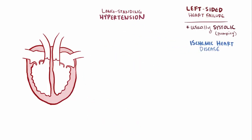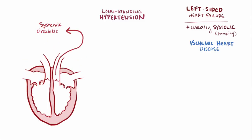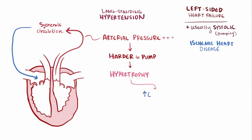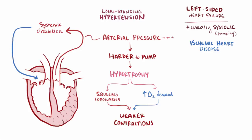Long-standing hypertension is another common cause of heart failure. As arterial pressure increases in the systemic circulation, it gets harder for the left ventricle to pump blood out. To compensate, the left ventricle actually bulks up and its muscles hypertrophy, or grow, so that the ventricle can contract with more force. The increase in muscle mass also means there's a greater demand for oxygen, and the coronaries get squeezed down by this extra muscle so that even less blood is delivered to the tissue. More demand and reduced supply means that some of the ventricular muscles start to have weaker contractions, leading to systolic failure.